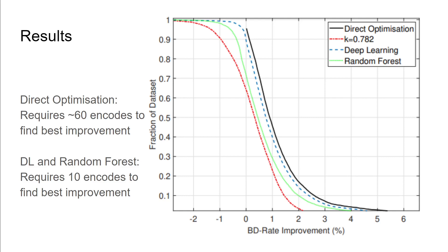The direct optimizer took roughly 60 encodes to find the best improvement, whereas our deep learning system as well as the random forest required only 10 encodes to find the best improvement. That is a reduction in video encodes, which is always good to see. We are approaching our direct optimizer with deep learning being the dashed blue line here, and it nearly gets to the same level as the direct optimizer, but at a fraction of the encodes.